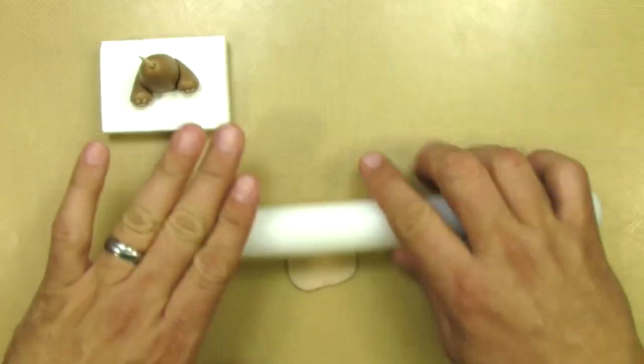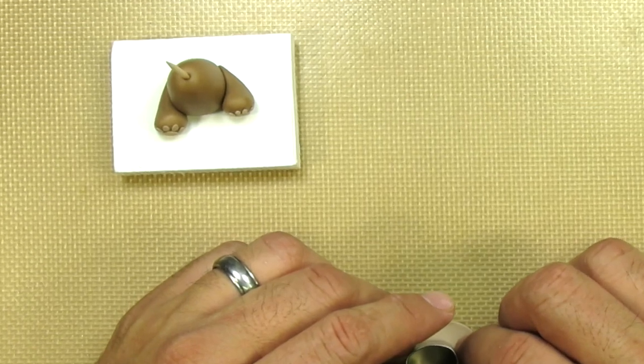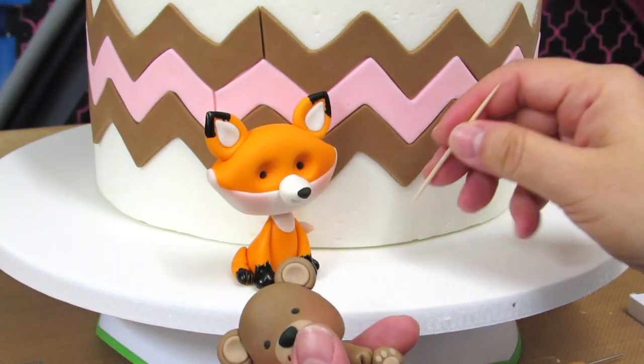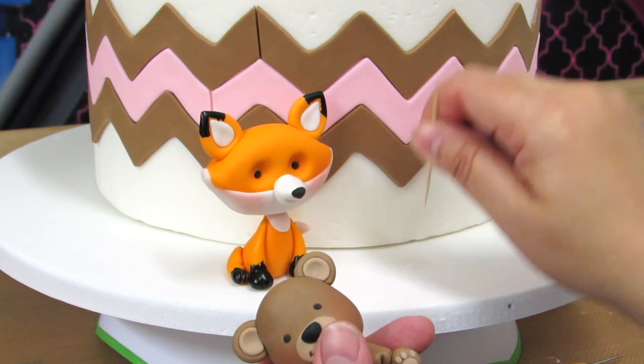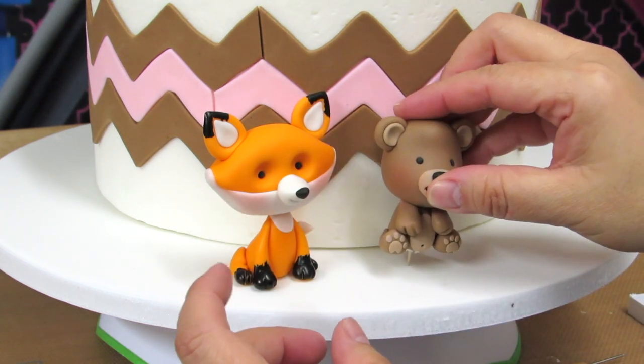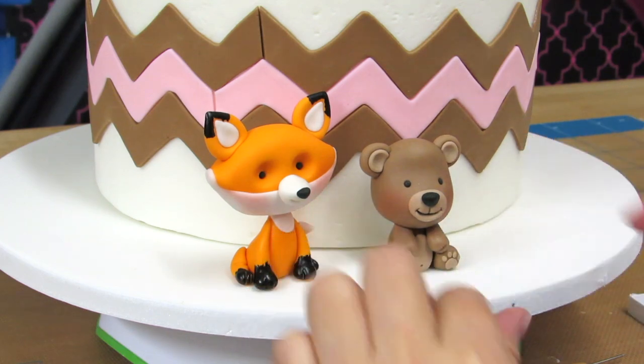For the bear's tummy, we're rolling out some gum paste and we're going to cut out a little oval shape. Right about here is where we'd like to point out that the small toothpick has been replaced by a complete toothpick. The toothpick is going through the entire torso and also going through the little foam core board that it's sitting on. The purpose of doing this is to keep the bear completely stable while it's drying, especially because it's going to have a really big head and we don't want any tilting or leaning while it's drying. Also, we use the toothpick to help anchor our topper to the foam core board that the cake is on.